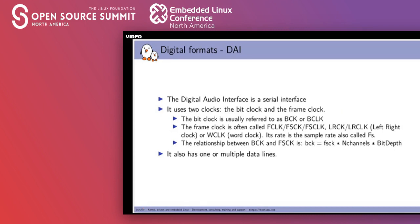The digital audio interface is a serial interface that uses two clocks. The bit clock is usually called BCK or BCLK in datasheets, and the frame clock is often called FCLK, FSCK, FSCLK, or sometimes LRCK, LRCLK, or even WCLK (word clock). The rate of the frame clock is the sample rate — also called FS — which is the sample rate of the audio you are playing or recording.